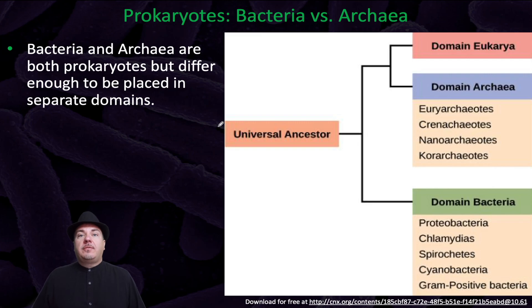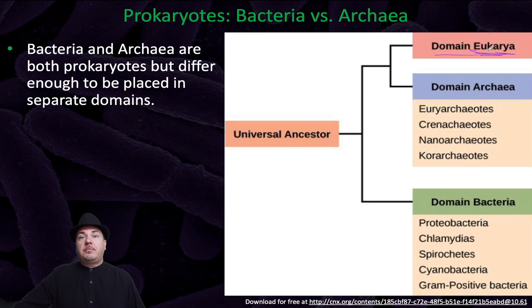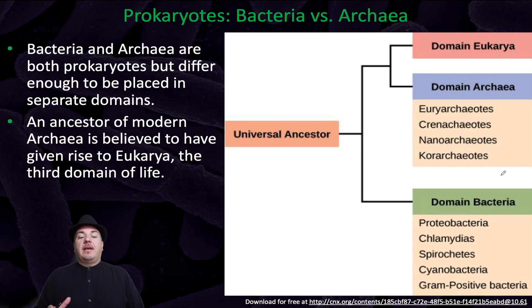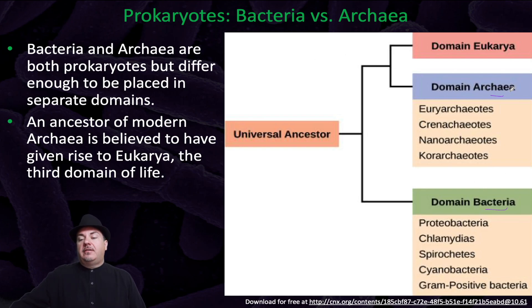If we think about these different types of organisms living on the planet, all of them fit into one of three domains. That's the domain Eukarya — things like animals, plants, fungi, and protists — and then the prokaryotes, which are the domain Archaea and the domain Bacteria. The ancestor of modern archaea is believed to have given rise to the eukaryotes, so the Eukarya evolved from an ancestor that included the archaea.